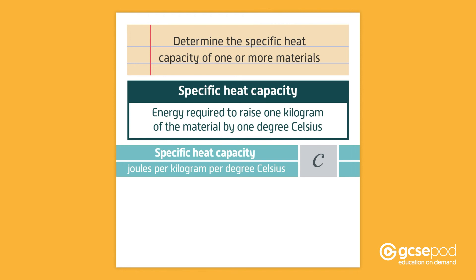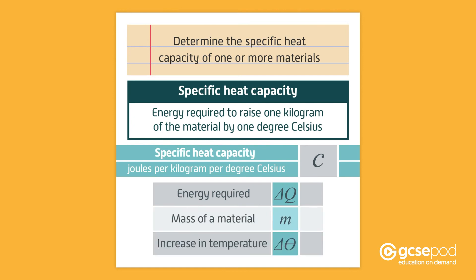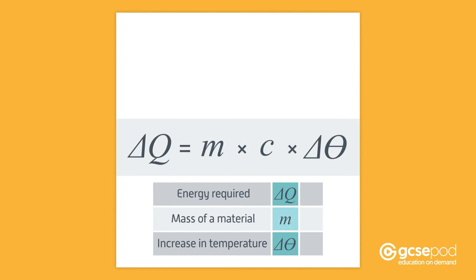Specific heat capacity, symbol C, is measured in joules per kilogram per degree Celsius. The equation to calculate the energy required to raise the mass of a material through an increase in temperature is delta Q equals M multiplied by C multiplied by delta theta.